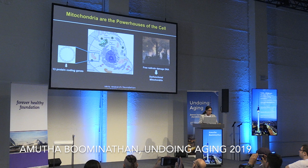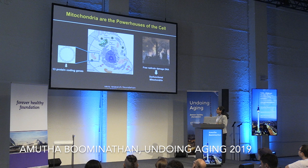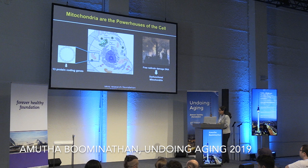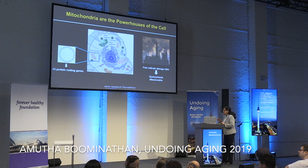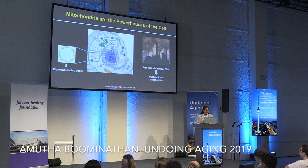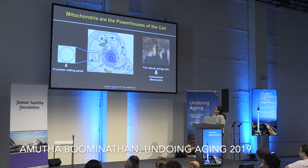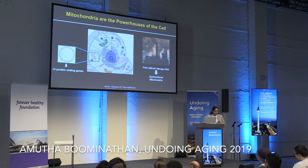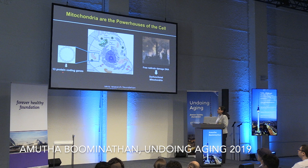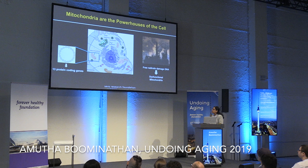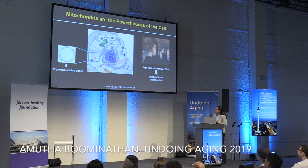Several speakers before me have emphasized the importance of oxidative stress and its origins from the mitochondria. This is the only organelle in the eukaryotic cell that has its own DNA. It comes with a double-stranded circular DNA. In humans, it's about 16.5 kilobase pairs long and encodes 13 important proteins that are all part of the oxidative phosphorylation assembly.